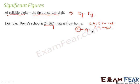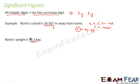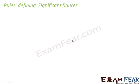Let us say your weight is 45.3 kg. How many significant figures are there? The reliable digits are 4 and 5, and 3 is the uncertain digit. Therefore we have three significant figures.